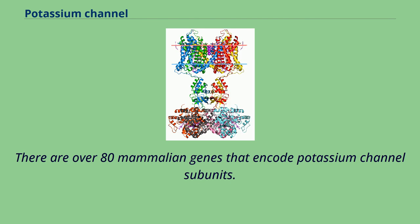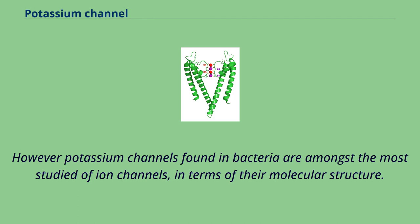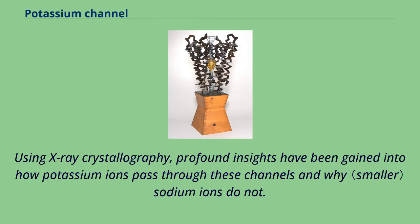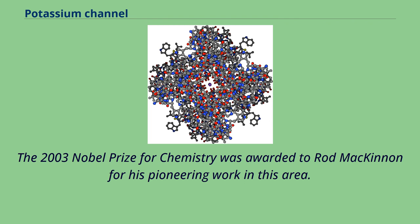There are over 80 mammalian genes that encode potassium channel subunits. However, potassium channels found in bacteria are among the most studied ion channels in terms of molecular structure. Using X-ray crystallography, profound insights have been gained into how potassium ions pass through these channels and why sodium ions do not. The 2003 Nobel Prize for Chemistry was awarded to Rod McKinnon for his pioneering work in this area.